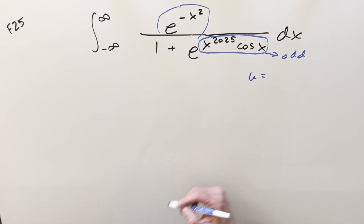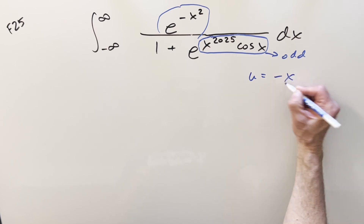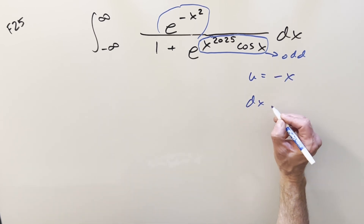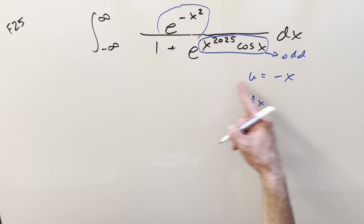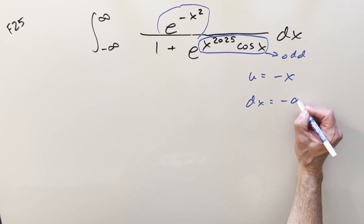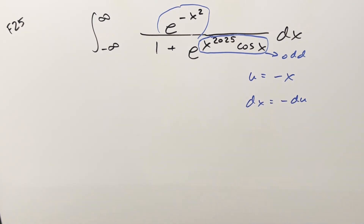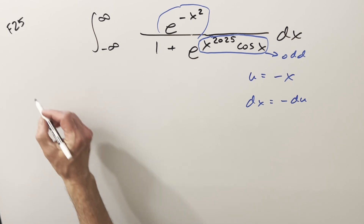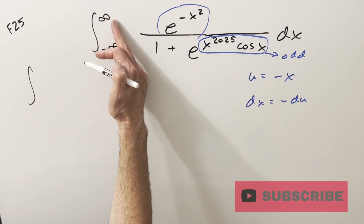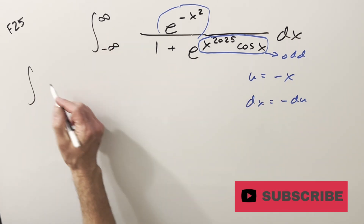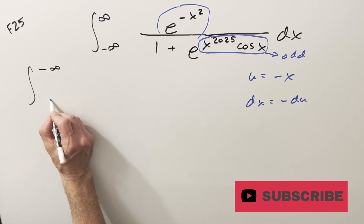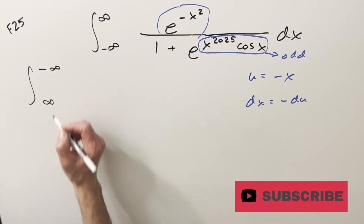What I'm going to do is a substitution u equals minus x. Solving for that, I can bring the minus on the other side, take a derivative, and we get dx is minus du. When we substitute, the minus x is going to reverse the sign on our bounds, so now it's going to be minus infinity here and positive infinity for this one.